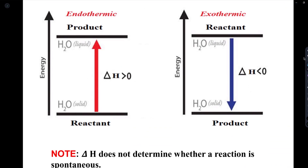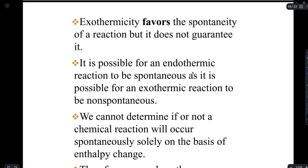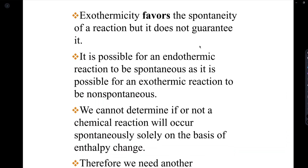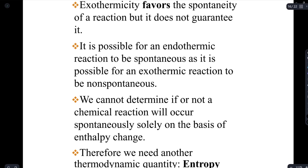Endothermic and exothermic are also terms you're going to hear a lot throughout this chapter. An endothermic reaction is a reaction that absorbs heat, so its delta H is always going to be greater than zero, or positive. Exothermic reactions release heat into the environment, so their delta H is going to be less than zero, or negative. Note that delta H does not quite determine whether a reaction is spontaneous or not, but exothermic reactions are actually more likely, though not guaranteed, to be spontaneous. It is also possible for an endothermic reaction to be spontaneous, but it is less likely.